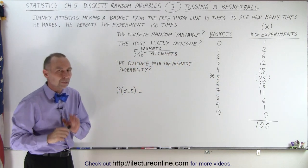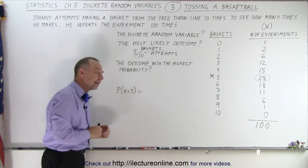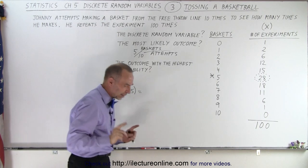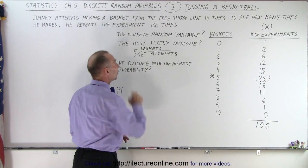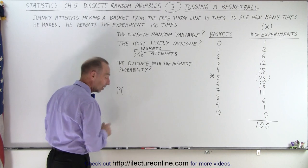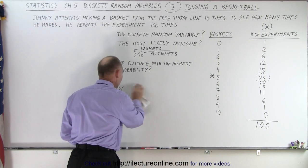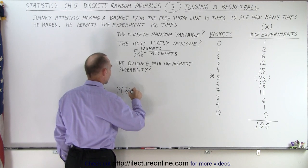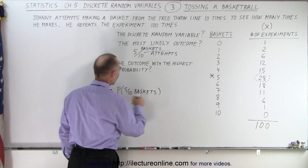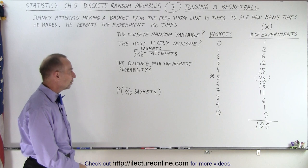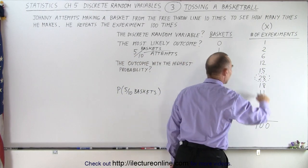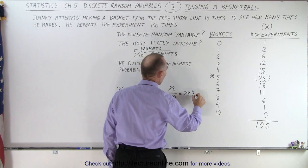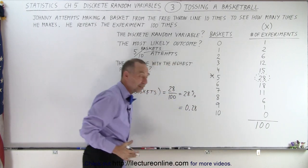That happens 28 out of 100 times. What is the probability that he'll make five out of 10 baskets? Well, he does it 28 times out of 100 experiments, so the probability is 28 out of 100, which is 28% or 0.28. Those are the different ways in which you can express that probability.